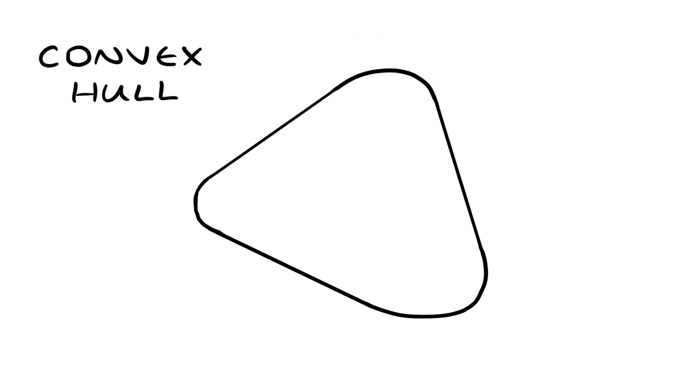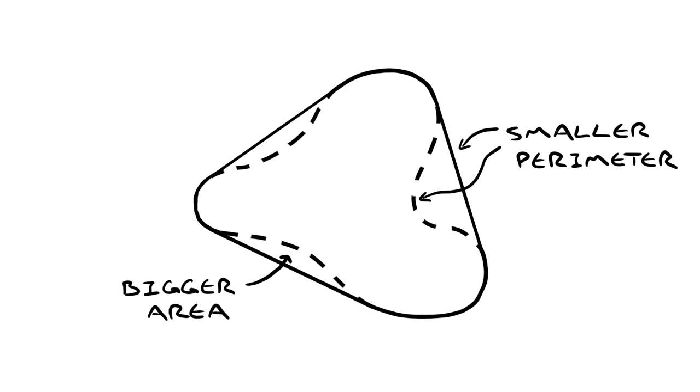If a shape is concave, then we can make another shape by taking its convex hull, or the smallest convex shape that contains it. This new shape is guaranteed to have a smaller perimeter and a bigger area, so we've already narrowed our answer down to something that's convex.